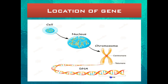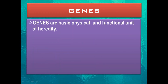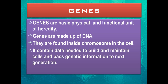Genes are made up of a special type of molecule called deoxyribonucleic acid, or simply DNA. The gene is located inside the DNA, the DNA is inside the chromosome, the chromosome is found inside the nucleus, and the nucleus is found in the cell. Genes are the basic physical and functional unit of heredity. They are made up of DNA, found inside chromosomes in the cell, and contain the data needed to build and maintain cells and pass genetic information to the next generation.